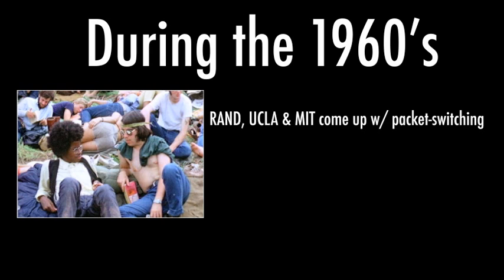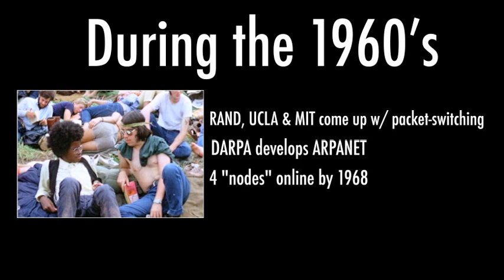Packet switching allowed DARPA — the Defense Advanced Research Projects Agency — to develop ARPANET, which was the first public network. ARPANET was designed for government entities and educational institutions. In 1968 there were four nodes — four computers on ARPANET — and they were all educational or governmental organizations, not publicly accessible.